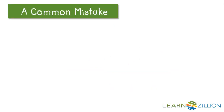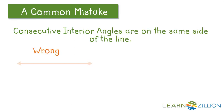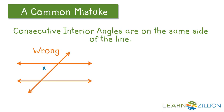Let's take a look at a common mistake. Consecutive interior angles are on the same side of the line. A student may incorrectly think that angles X and Y are consecutive interior angles because they're interior, but we see they're not on the same side of the intersecting line, so we cannot call them consecutive interior angles.